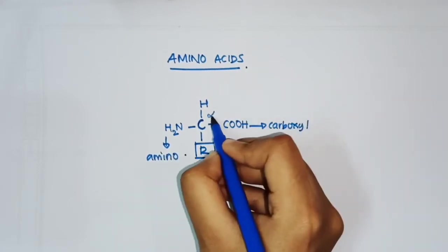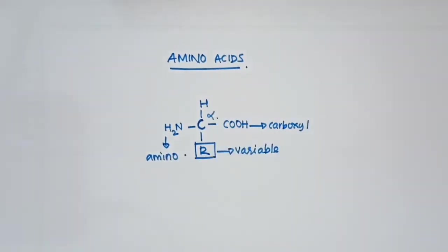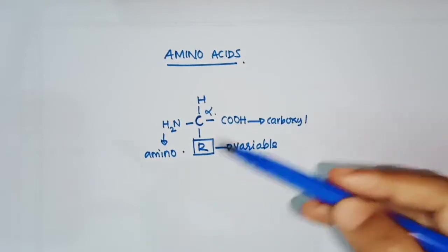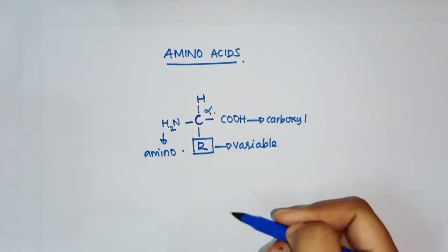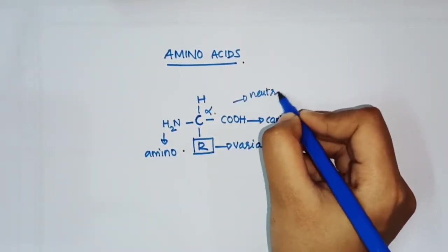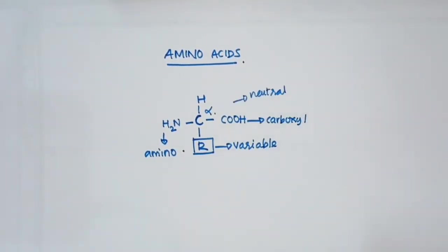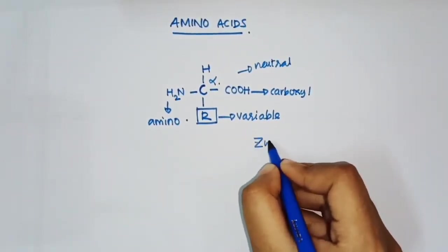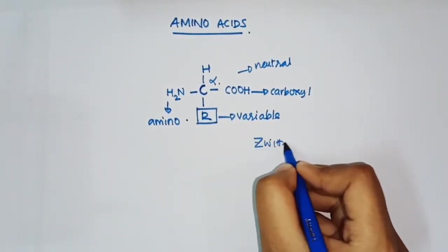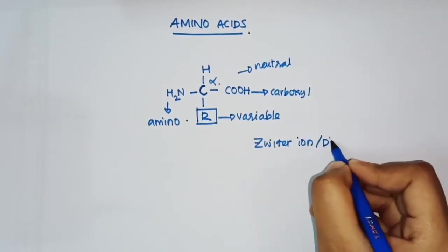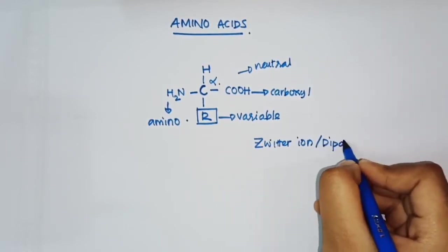This central carbon is the alpha carbon. In nature, amino acids rarely exist in this neutral form. In the majority of cases they exist in the zwitterionic form, also called the dipolar form.